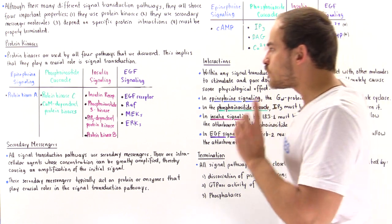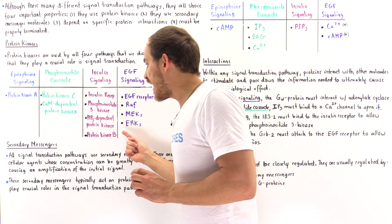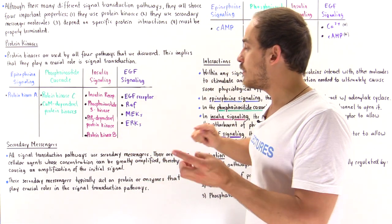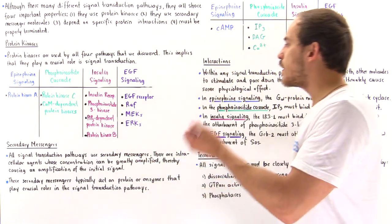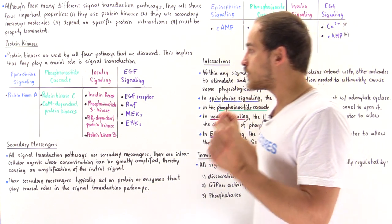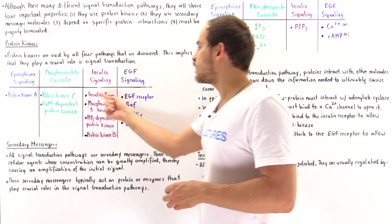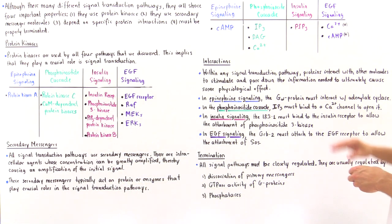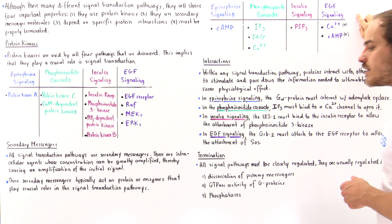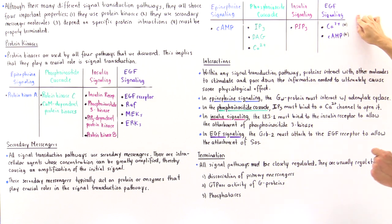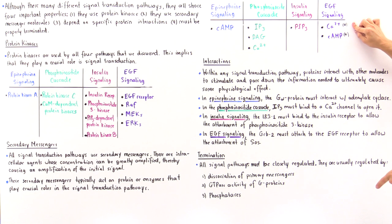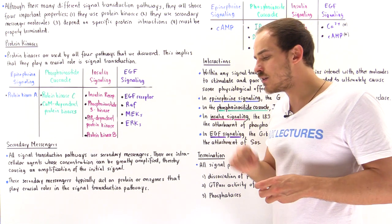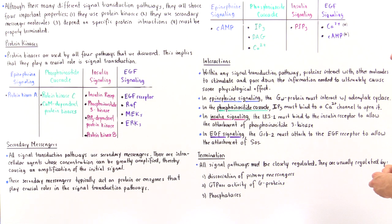In insulin signaling, the PIP3-dependent protein kinase must bind PIP3 to activate protein kinase B. PIP3 itself is produced by phosphoinositide 3-kinase. In our discussion of EGF signaling, we did not examine these secondary messengers in detail, but calcium as well as cyclic AMP are in fact secondary messengers that stimulate the EGF signaling pathway.